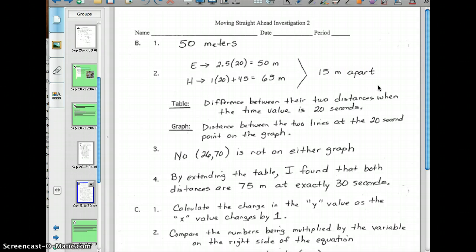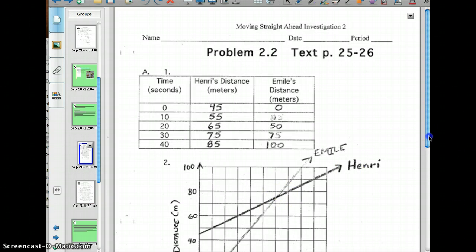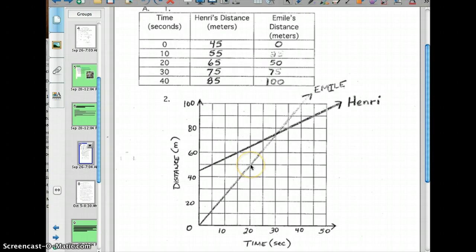Now, how can we see this distance represented in the table? Well, if you look at the table where both 20 seconds are, you can see that one's 50 and one's 65. In the graph, if we jump back to the graph, we can see at 20 seconds, one brother's here at 50 and the other brother is here at 65. So this distance from here to here is going to be how far apart they are, and that should be the 15 meters.